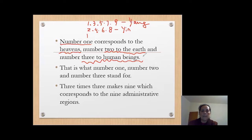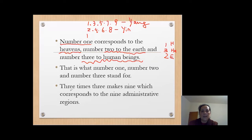But truly human beings belong between heaven and earth. So that's number one, two, three — heaven, human, and earth. Human is between heaven and earth. So three times three — that's the number nine. That's where the number nine comes from.